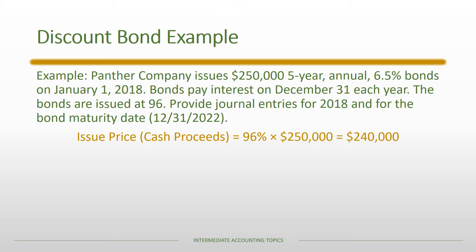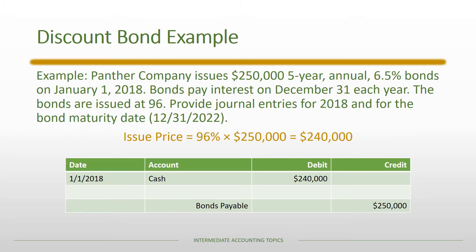The first thing we calculate is the issue price — the cash received at issuance. A price of 96 means 96% of the face value, for a total of $240,000. Regardless of whether we use the effective interest or straight-line method, the price calculation is the same. The bond payable has a par value of $250,000, cash proceeds are $240,000, and the difference is a discount on bonds payable.